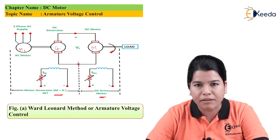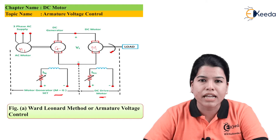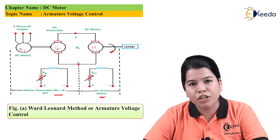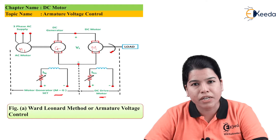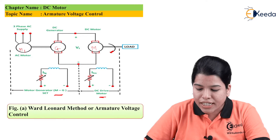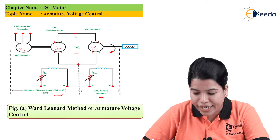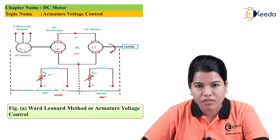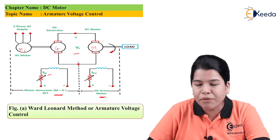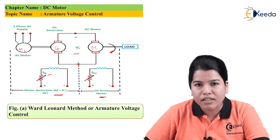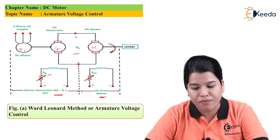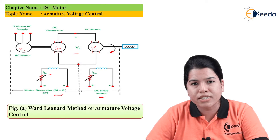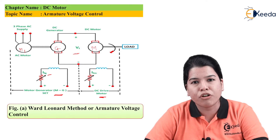In the Ward-Leonard method, armature voltage is controlled. The speed can be controlled below the rated speed as well as above the rated speed. For controlling speed below the rated speed, the generator output voltage Vt can be varied by varying the generator field current IFG. The DC motor's field current, flux, and armature current are all maintained constant at their rated values.